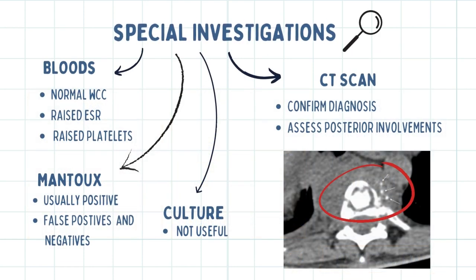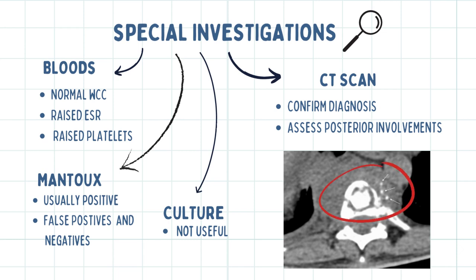Investigations include blood tests such as a full blood count and ESR. A full blood count may reveal a normal white cell count and raised platelets. An ESR may be raised in TB. A Mantoux test can be done and the result is usually positive; keep in mind that false positives and false negatives may occur.